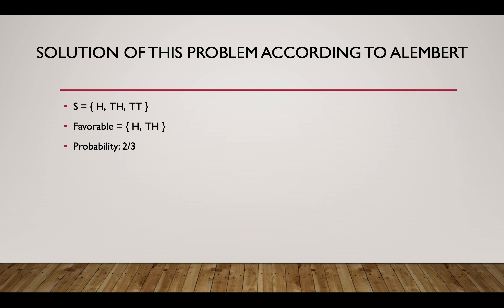So let's look at the solution of this problem according to d'Alembert. One of the most famous intellectuals of the 18th century, d'Alembert, proposed a different solution. He argued that in real life the situation is different, because the question asks us to find the probability of at least one H. Therefore, when we solve this question or similar questions, we do not need to continue checking the rest if we already get H.